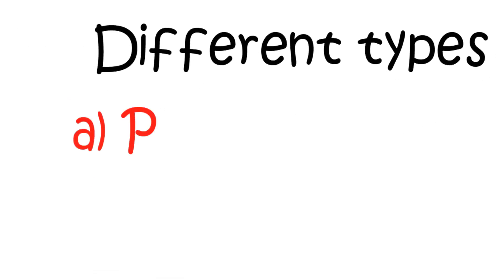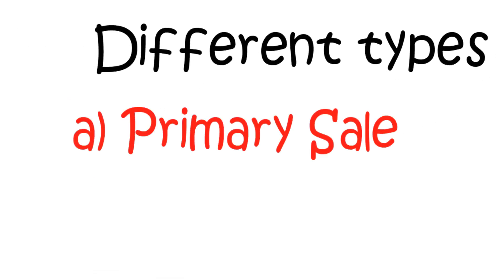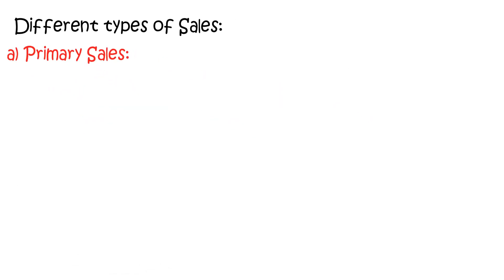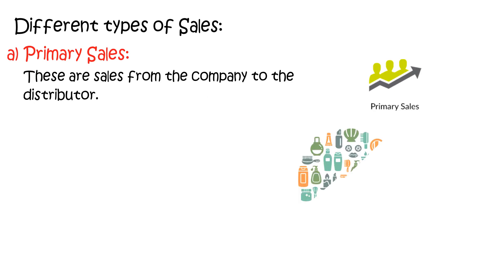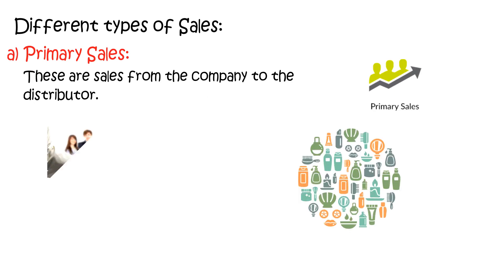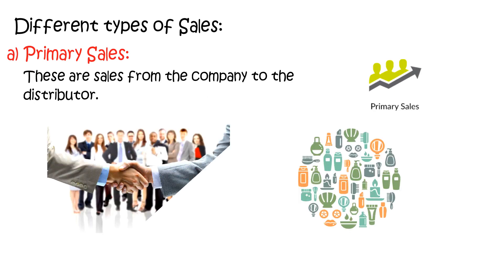Different types of sales — there are three parts. Firstly, primary sales. These are sales from the company to the distributor. For example, the amount of product that a distributor purchases from the company. Normally, area managers and regional managers are responsible for primary sales.